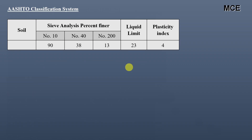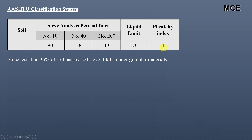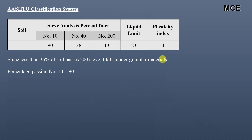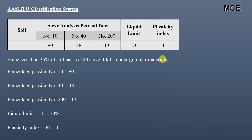Now for the AASHTO Soil Classification System. The percent finer for sieve number 10 is 90, sieve number 40 is 38, and sieve number 200 is 13. Liquid limit is 23 and plasticity index is 4. Since less than 35 percent of the soil passes sieve number 200 (the 75 micron sieve), this soil falls under granular materials in the AASHTO classification.